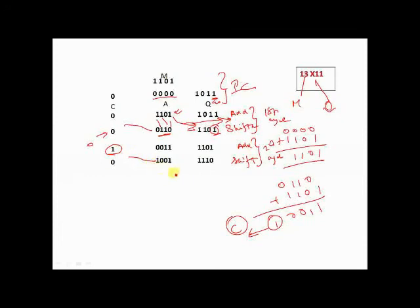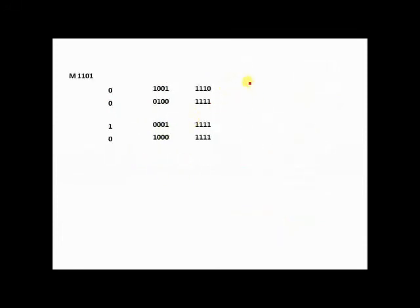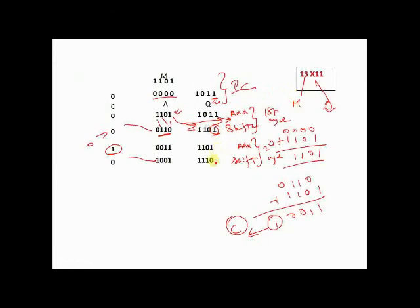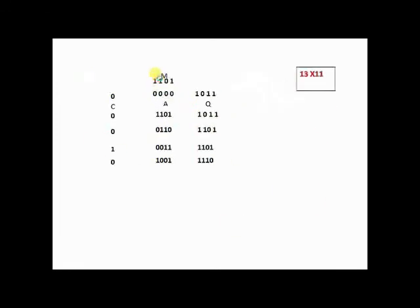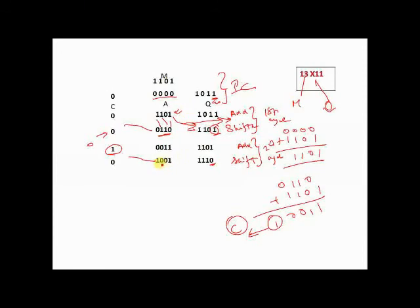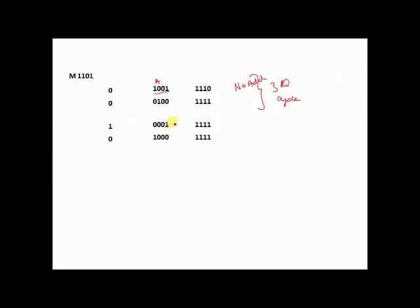Now we go to the third cycle. Depending on the value of q0, which is 0, it will decide add or no add. Since it is 0, it will be no add. No add means the content of A remains the same, so A stays as 1001. Next, we shift right one place, giving 1100 in A and 1001 in Q with the bit shifting out. That completes the third cycle.